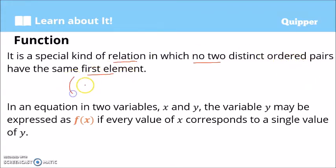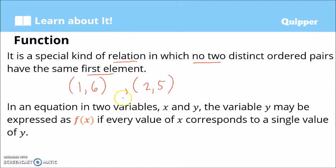For example, let's say we have the ordered pairs (1, 6) and (2, 5). So these are two ordered pairs. We need to check on their first elements — dapat hindi magkapareho. We have 1 here and 2 here, so they are not the same. Therefore, they form a function.